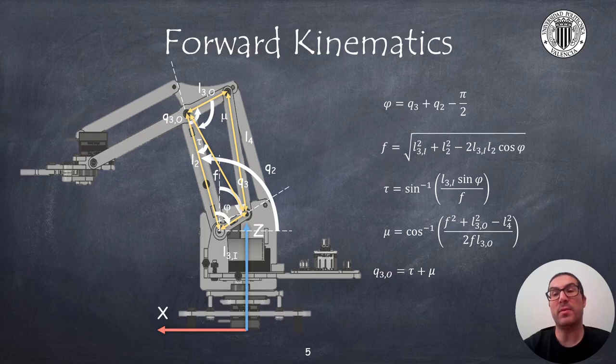Then, dividing this triangle formed with sides l2f and l3i into two right triangles, then we can obtain the angle tau.